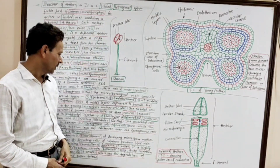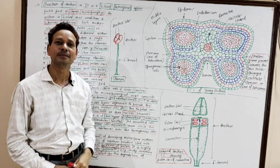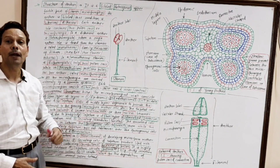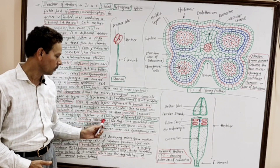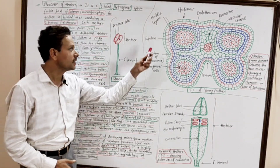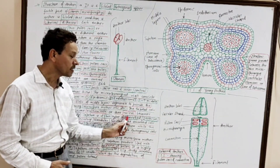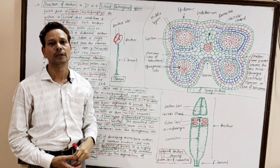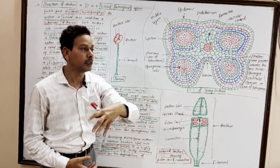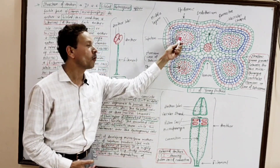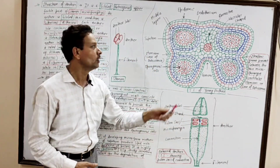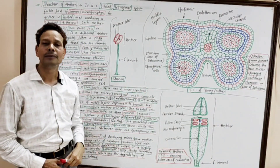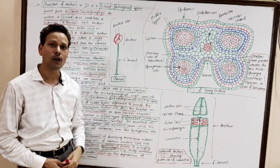Dear students, the tapetum is of two types. It may be amoeboid, invasive, or periplasmodium type. The second type is secretory, glandular, or parietal type. In the amoeboid type, the cells fuse to produce a periplasmodium, which passes into the sporogenous tissue to provide nourishment to the pollen mother cells and pollen grains. The secretory or glandular tapetum secretes nutrients for the pollen mother cells and developing pollens.